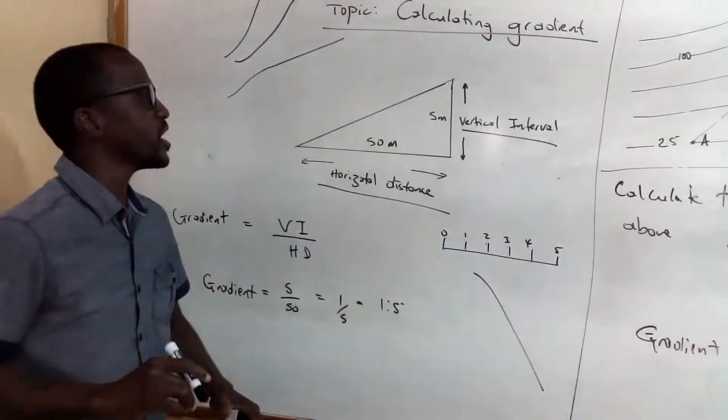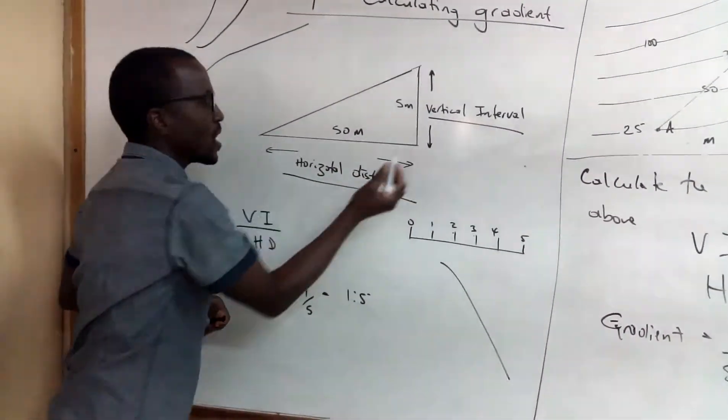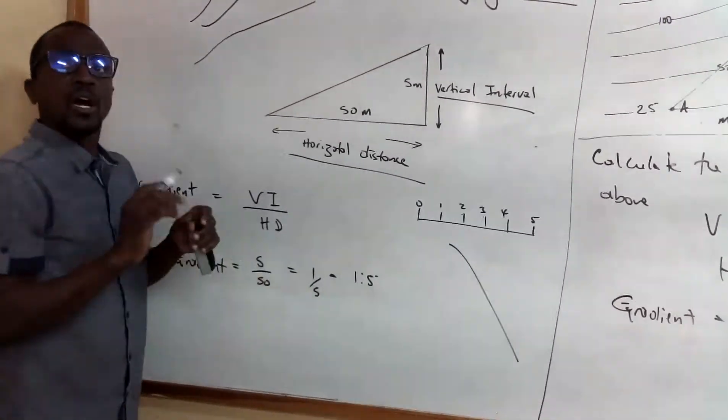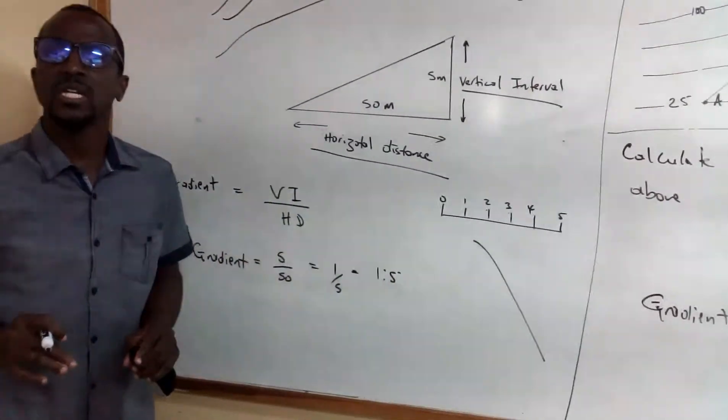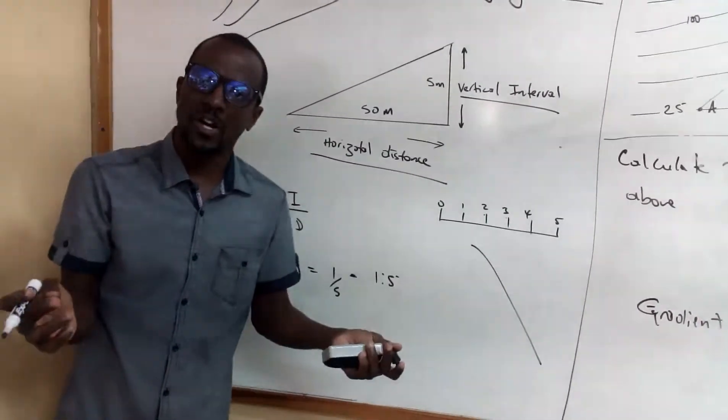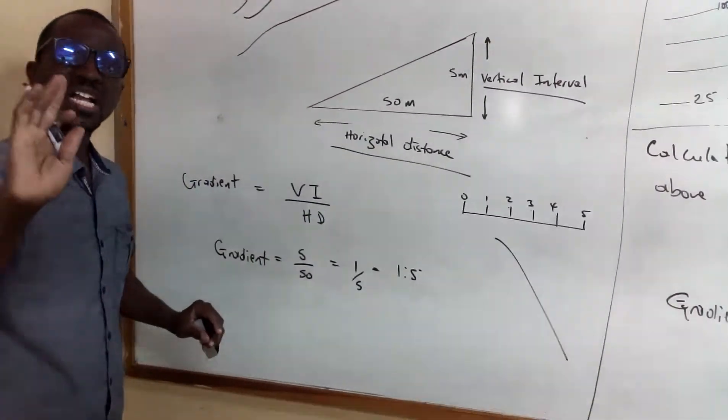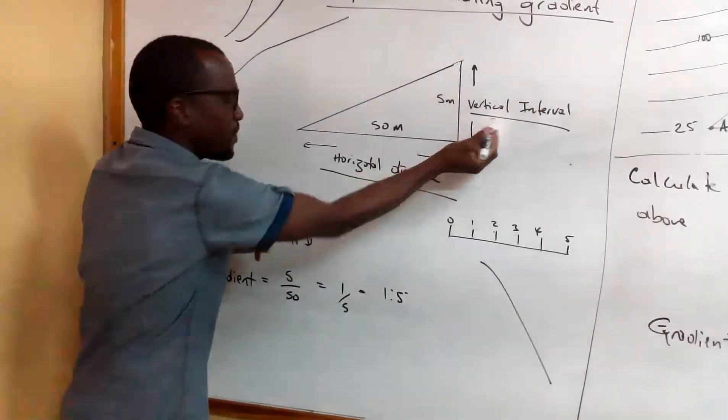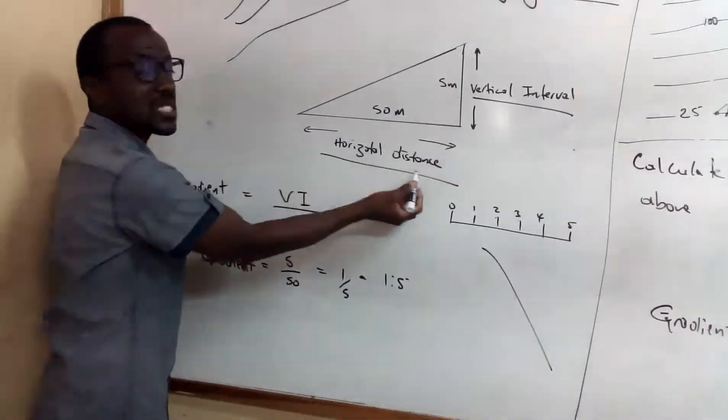In calculating gradient you first will need your vertical interval and you will need your horizontal distance. You also will need your scale and you also will need preferably a piece of paper so as to do your measurement. So in calculating your gradient it is VI which is the vertical interval upon HD which is the horizontal distance.